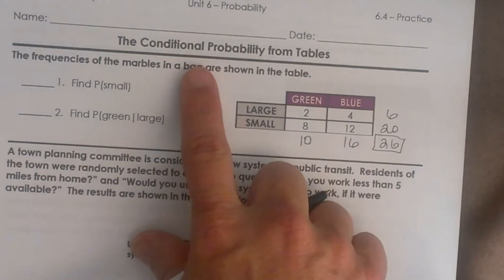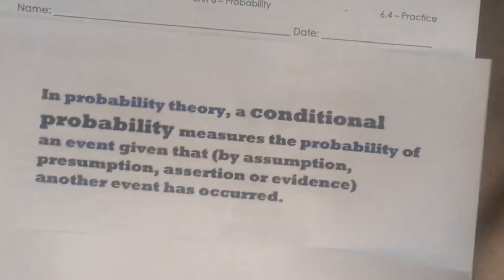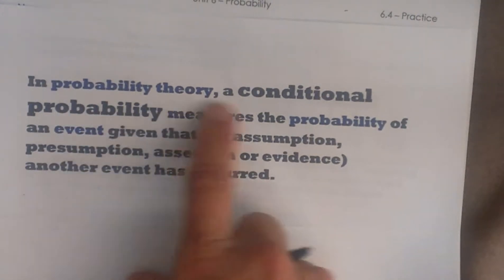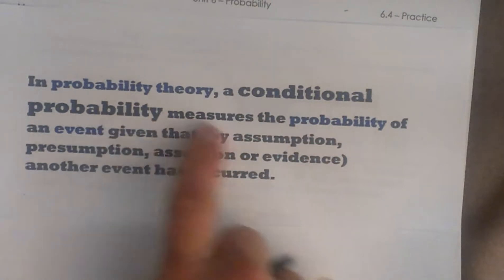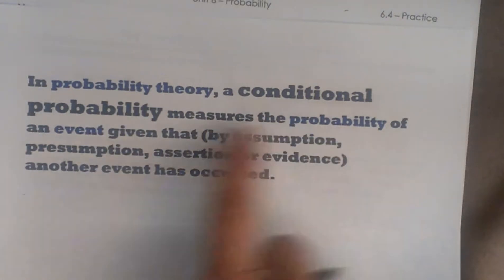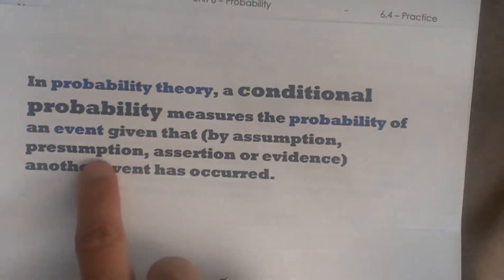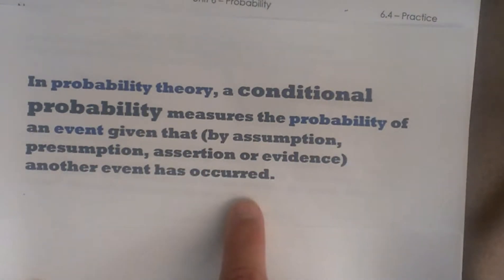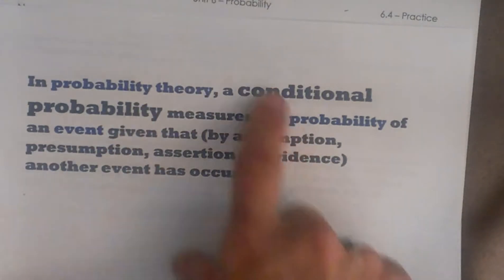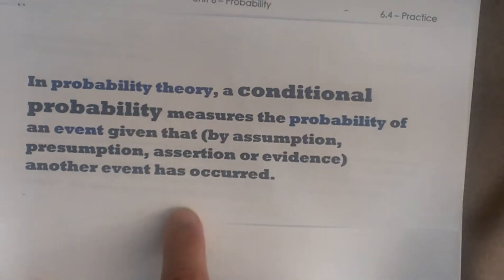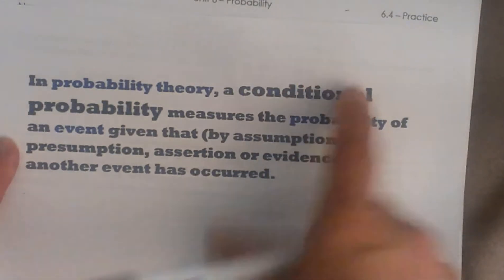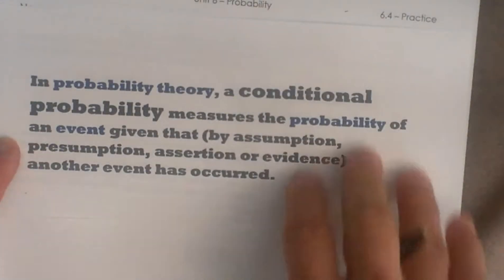So conditional probabilities — first let's define what a conditional probability is. A conditional probability measures the probability of an event given by assuming, presumption, assertion, or evidence that another event occurs. I think of this as taking a subgroup — that's how you look at conditional probabilities. A condition occurs that then results in a different probability.